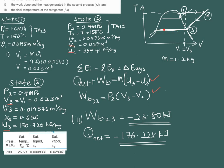Finally, for question three — the final temperature of the refrigerant — state 3 is the final state. At state 3, the pressure is 0.7 MPa (700 kPa) and it is in the mixture region. We read the saturated temperature from the constant pressure line using table A12. At 700 kPa, the saturated temperature is 26.69 degrees C, so T3 = 26.69°C.